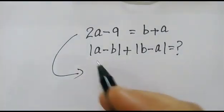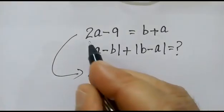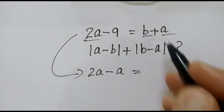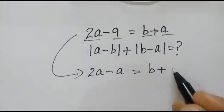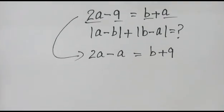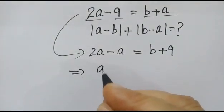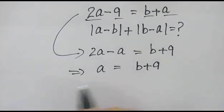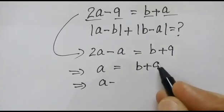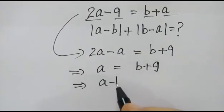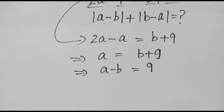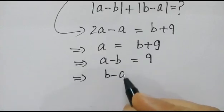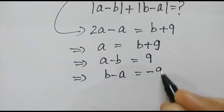So, 2a minus a is equal to b plus 9, which gives us a is equal to b plus 9, or a minus b is equal to 9. Therefore, b minus a is equal to minus 9.